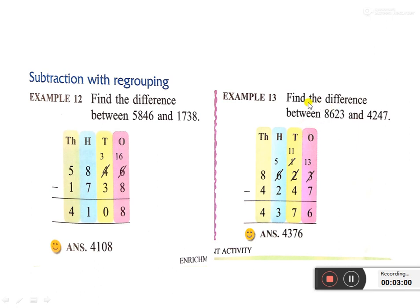One more example: find the difference between 8623 and 4247. This is also a 4-digit number. We write the bigger number first. The first digit here is 8, here is 4, so 8623 is the bigger number. We write 8623 first, then 4247. We start from the ones place.